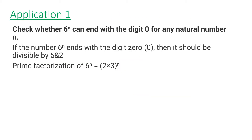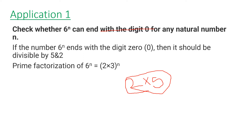The next application of the Fundamental Theorem is to check whether 6 raised to the power n can end with digit 0 for any natural number n. For a number to end with digit 0, it should have 2 and 5 in its prime factorization, since only these two factors make 10 at the end. But in the prime factorization of 6 raised to the power n, we do not get the factor 5, which is missing. So 6 raised to the power n will never end with digit 0.